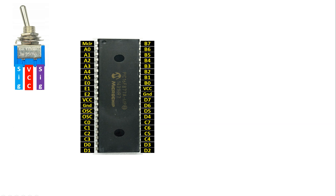To connect it with the PIC, connect the center pin — named as the VCC pin — to the VCC or five-volt pin of the PIC. For the signal pins, you will need a 10 kilohm resistor for each, like you do for a normal button — either a pull-up or pull-down resistor. Connect the right signal pin to one end of the 10 kilohm resistor.